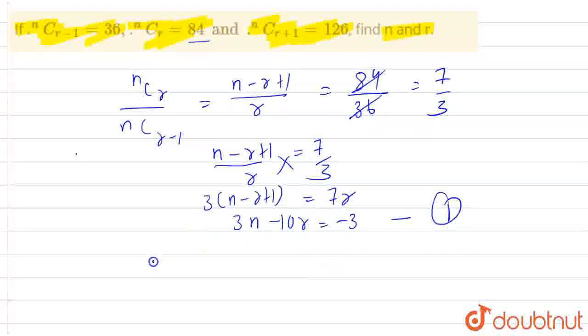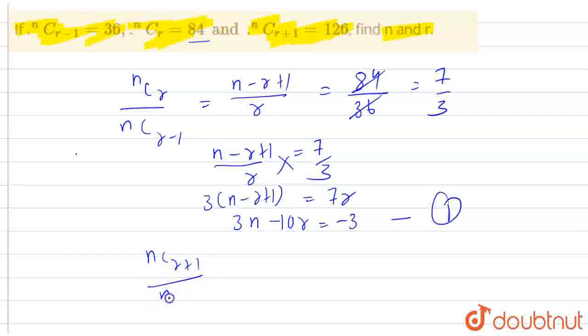Now, if we move forward, NCR+1 divided by NCR will be equal to N-R upon R+1. On solving, the value is 126 and NCR's value is 84. On cancelling out, we will get 3 by 2.